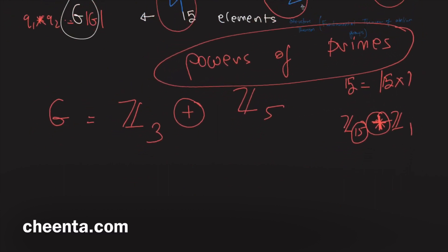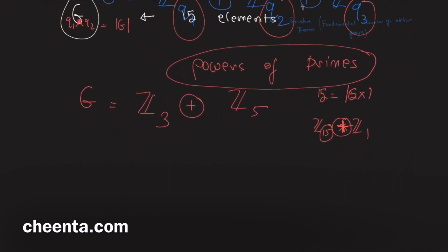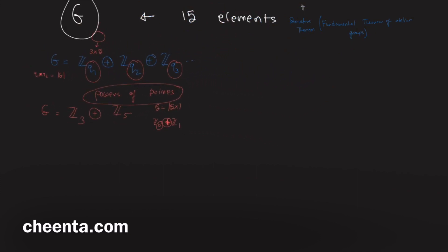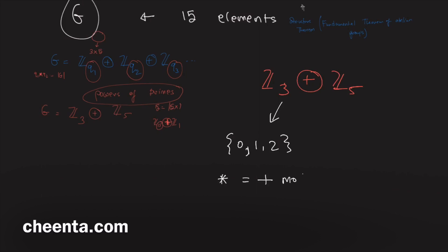The question really is: what can we say about Z15, and what do Z3 and Z5 mean? Well, Z3 is a special group containing three elements — 0, 1, 2 — and the operation is addition modulo 3. And Z5 has five elements — 0, 1, 2, 3, 4 — and the operation is addition modulo 5.